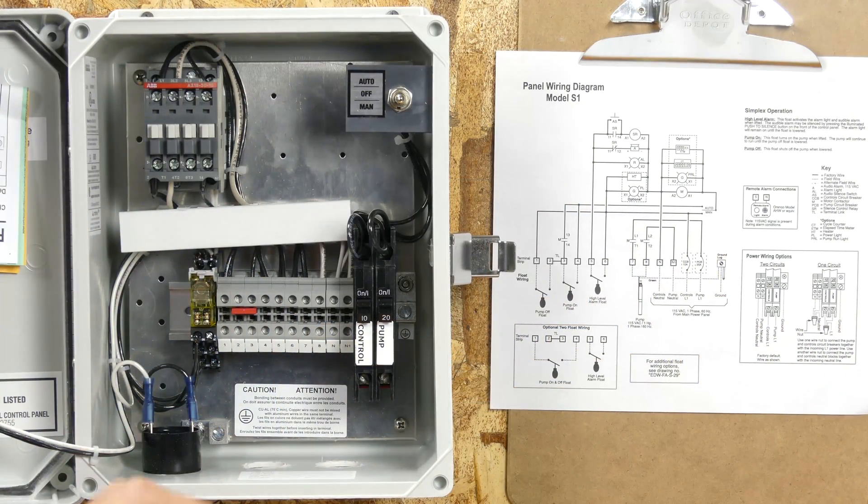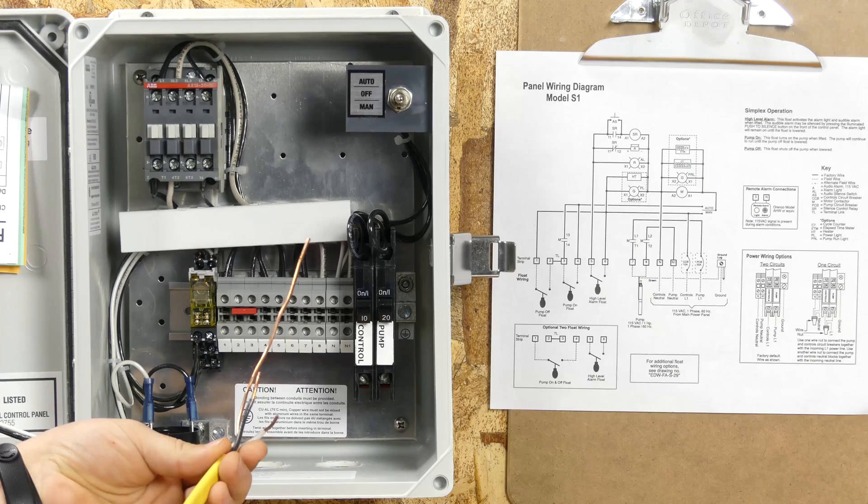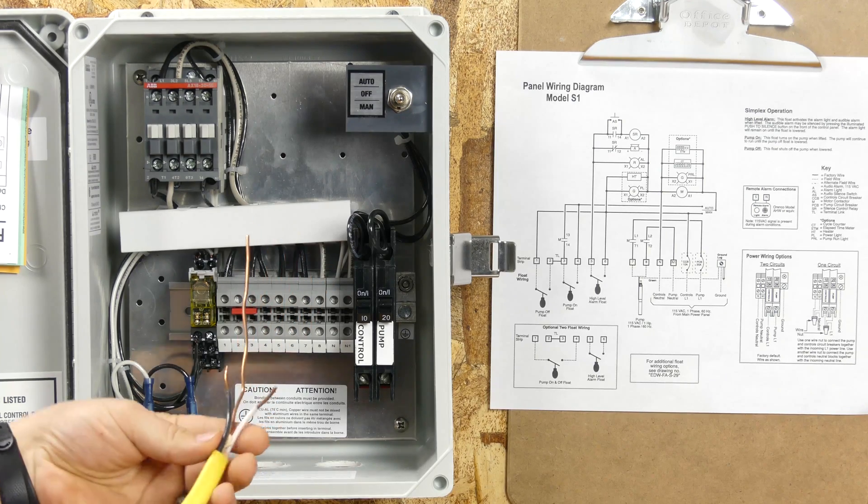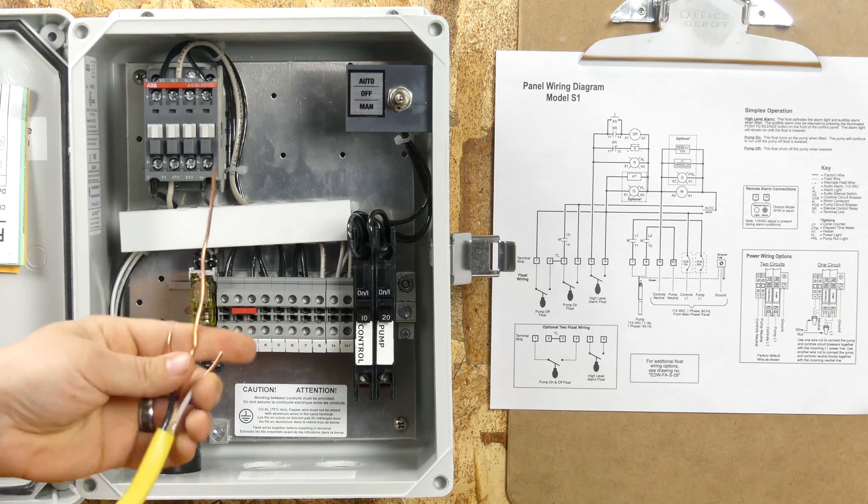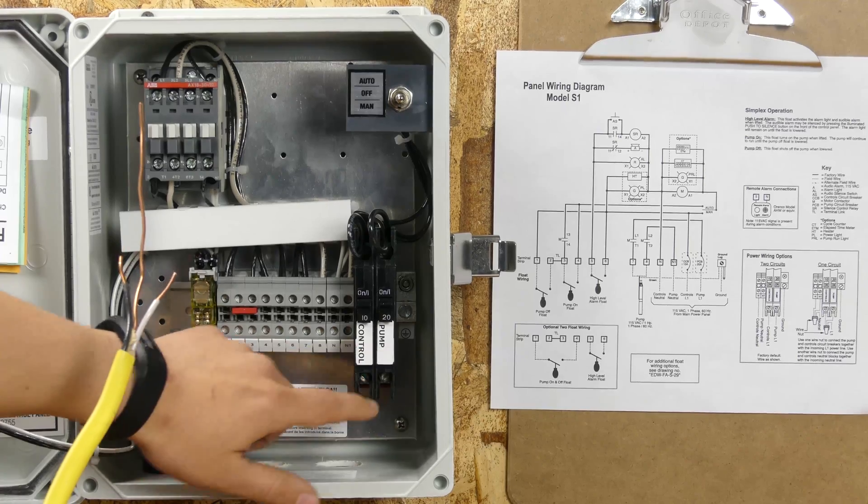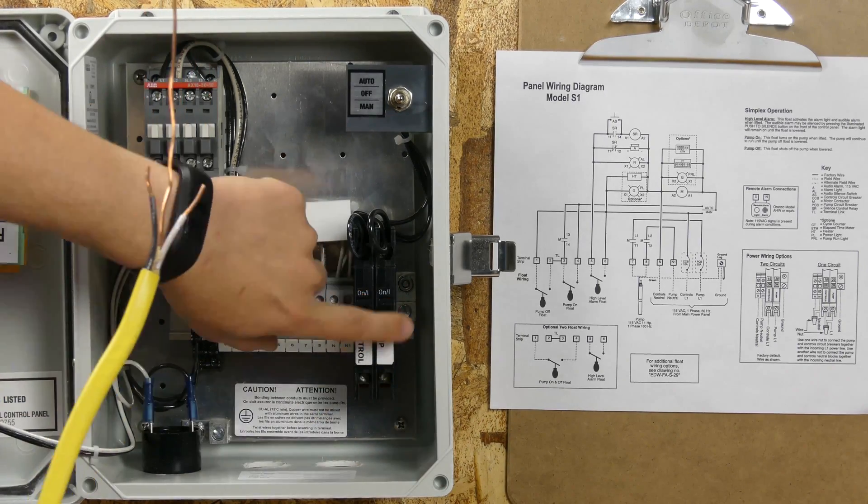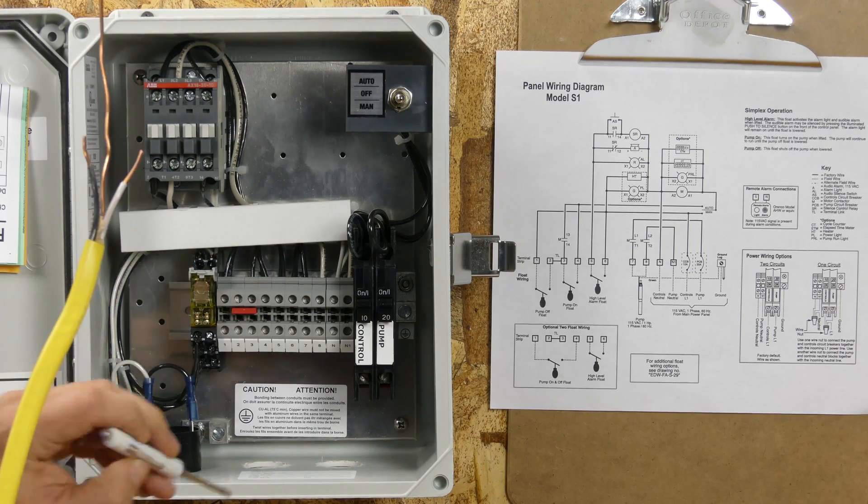The first thing that we're going to be hooking up is our incoming power. We're just doing one circuit. You can see the ground is really long here, and that's because you want the ground to be about four or five inches longer than your other wires, because the ground is way up over here on the side, so you need a little extra length. We're going to put this through and hook it up.